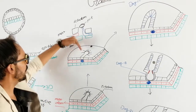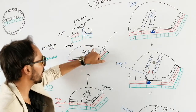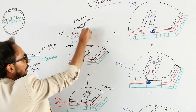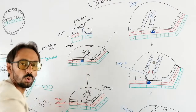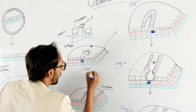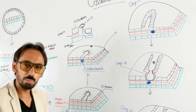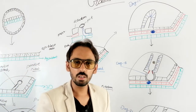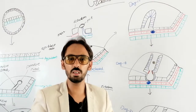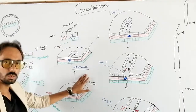When the ectodermal cells go through the primitive pit and move cephalically towards the pre-cordal plate, a tube-like structure is formed, and this tube-like structure is called the notochord. This beautiful notochord is actually the reason for neurulation — it will drive formation of different parts of the brain and the central nervous system.